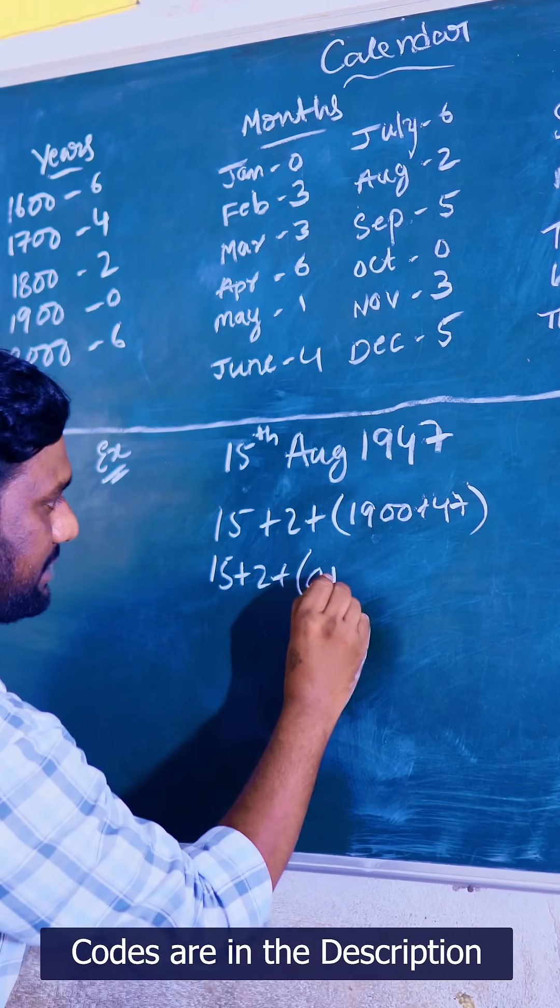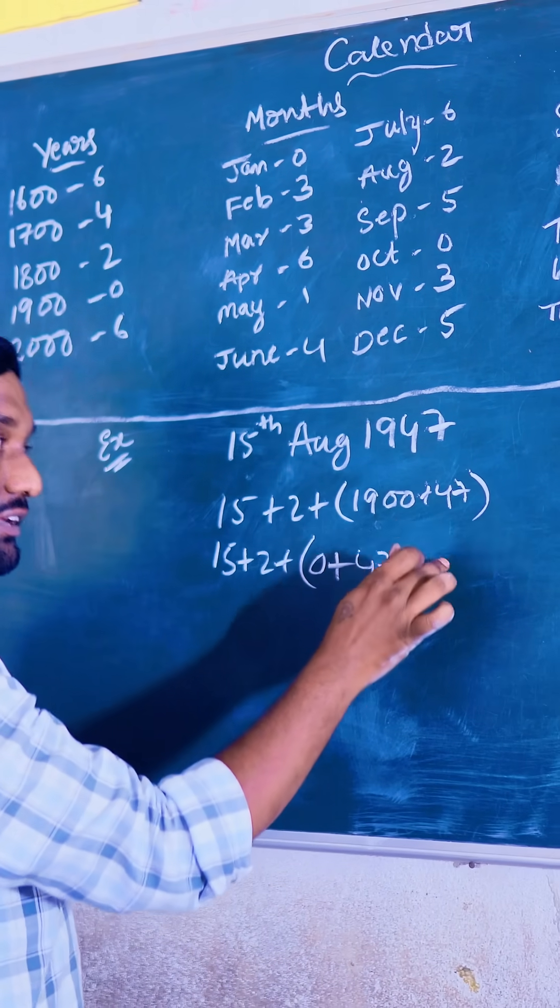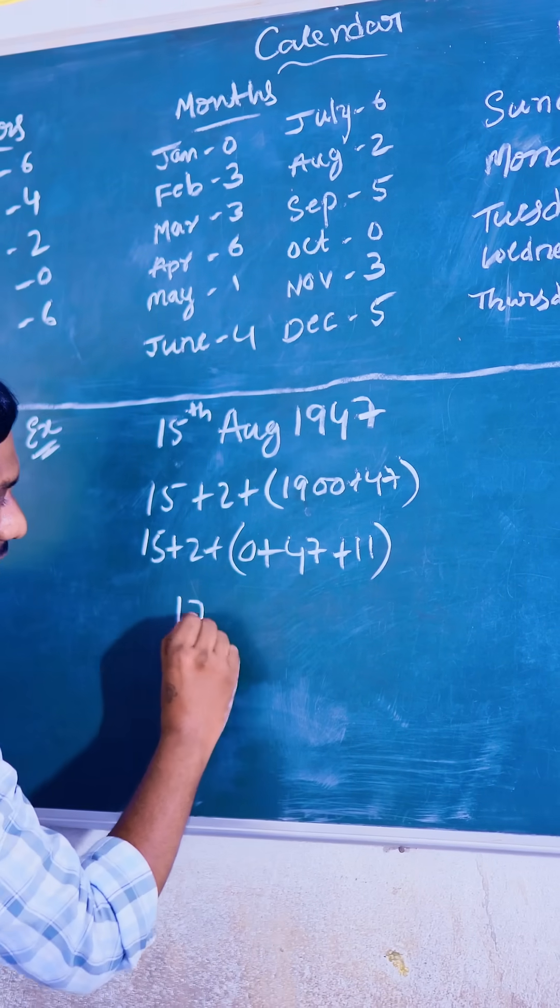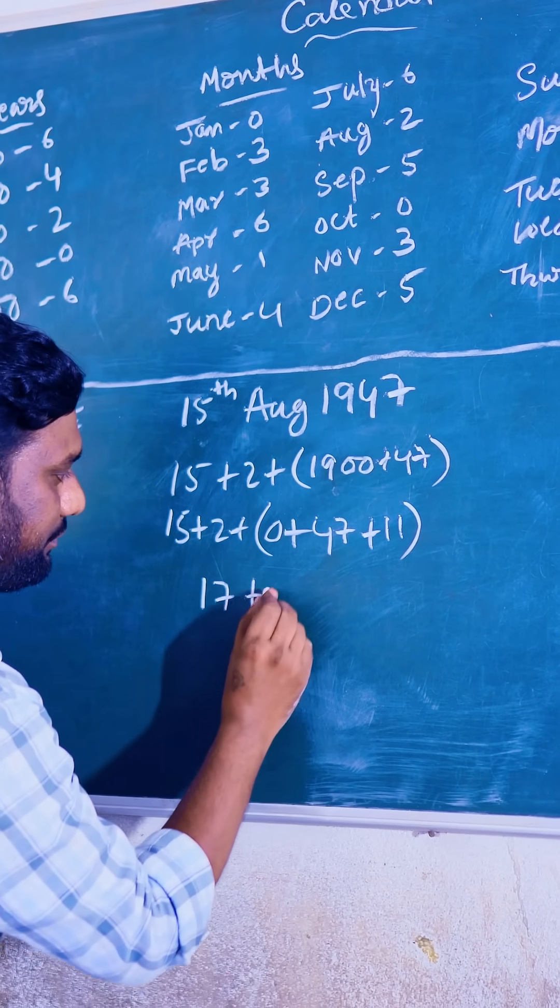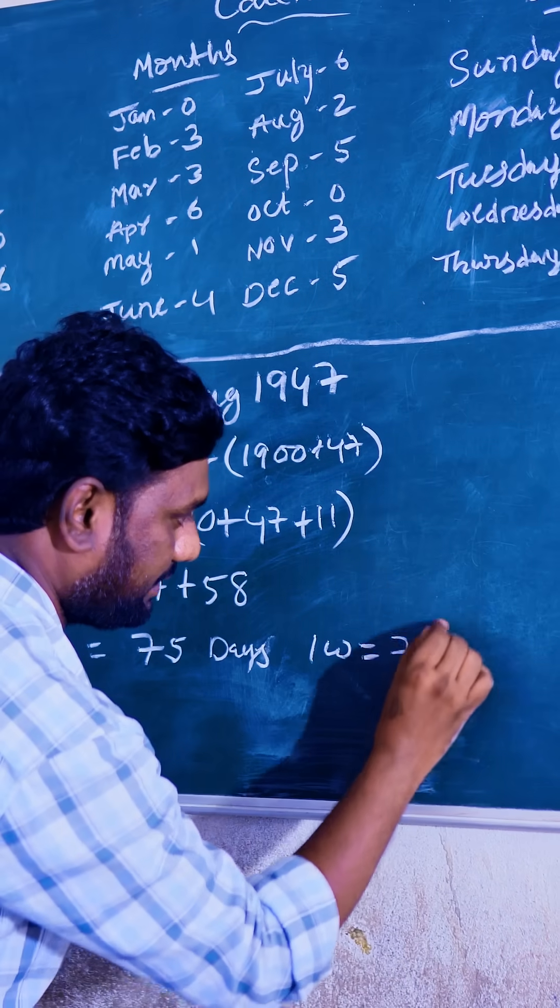Plus we should write here in this 47 years how many leap years are there? 11. LYs. Now 17 plus 47 plus 11 equals 58. So total 75 days. 1 week equals 7 days.